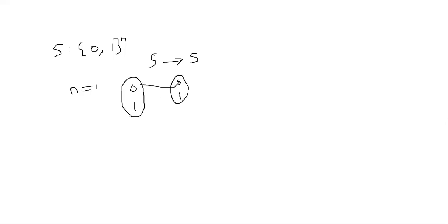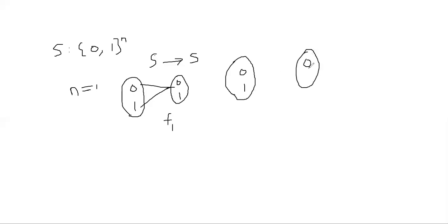Here is one easy mapping: both 0 and 1 map to 0. That's one function — we can call it f1 or f0, it doesn't matter. The next function maps both 0 and 1 to 1 — both cases map to 1. This is function f2.